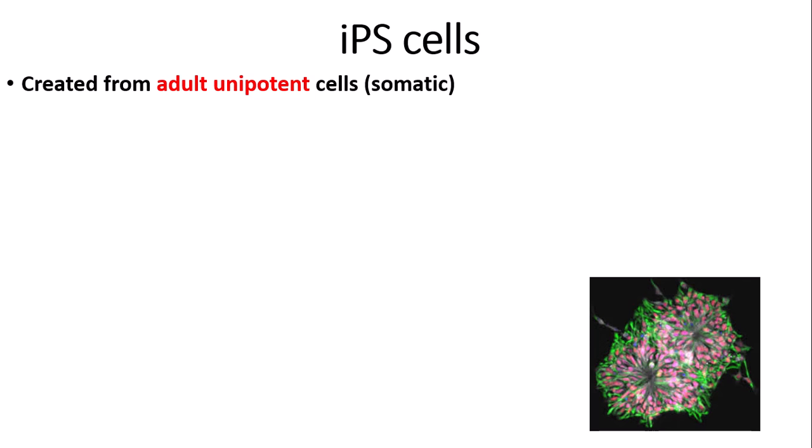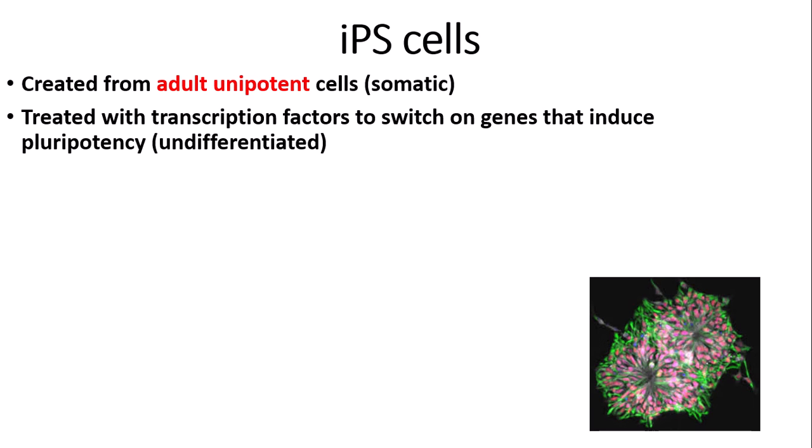Now I'm going to talk about IPS cells — induced pluripotent stem cells. IPS cells are created from adult unipotent cells, sometimes called somatic cells, not from embryos. These adult somatic cells are treated with proteins called transcription factors, whose job is to switch on genes that induce pluripotency, making the cells more undifferentiated. So IPS cells are essentially pluripotent stem cells produced from differentiated adult body cells by transcription factors.